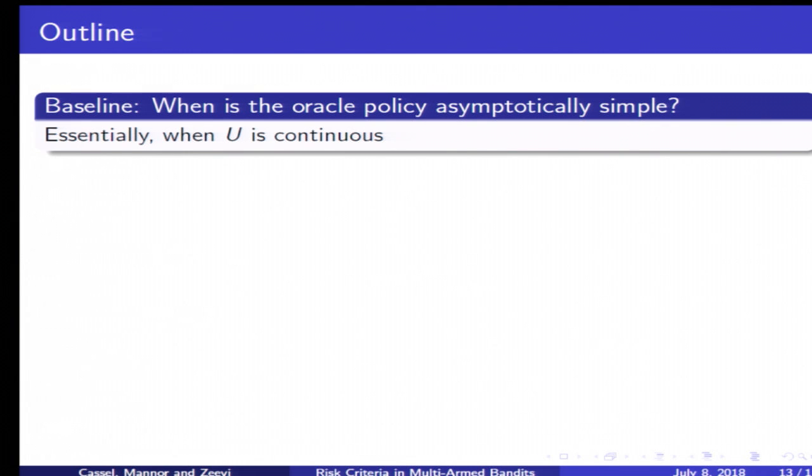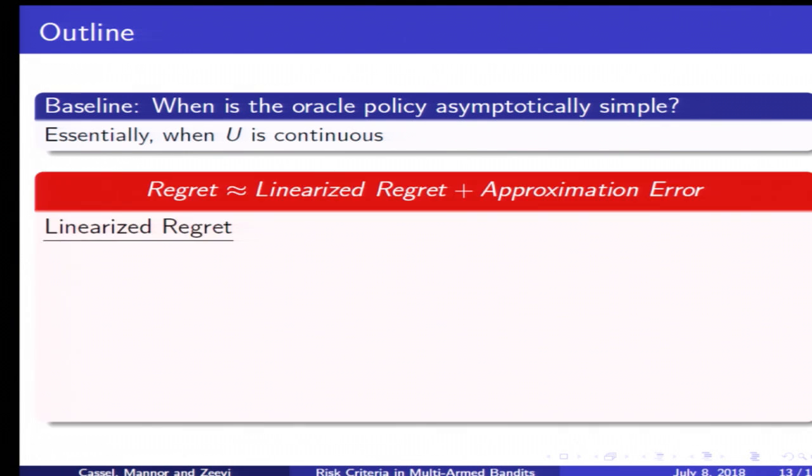How does it look in a very high level? With this baseline we can take the regret and decompose it into a form of linearized regret plus an approximation error. The linearized regret, as the name suggests, is essentially similar in its structure to the typical bandit regret. As such, we can define a UCB type policy which achieves an order of log T over T for the linearized regret.